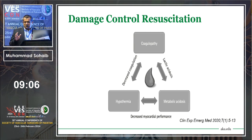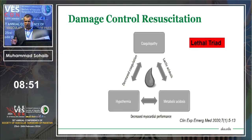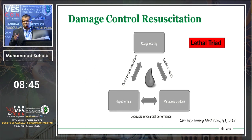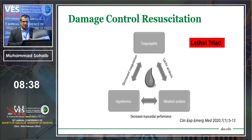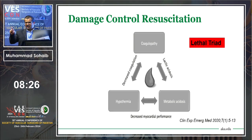Damage control resuscitation aims to prevent the patient from entering the lethal triad — not managing it once established. The lethal triad — also called the death triad — consists of hypothermia, acidosis, and coagulopathy, which act as catalysts for one another. Importantly, hypotension is not written in this triad. We often target blood pressure, but what we really need to monitor is hypothermia, acidosis, and coagulopathy.